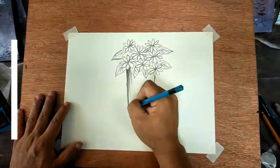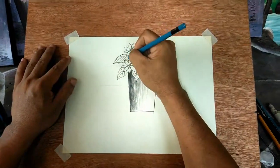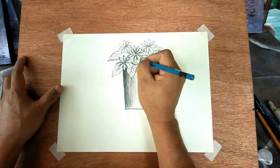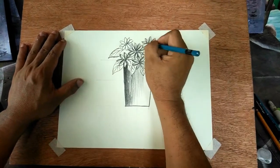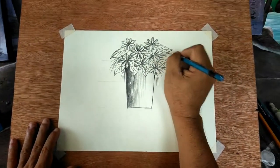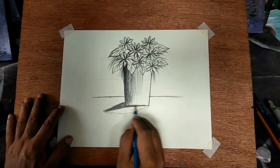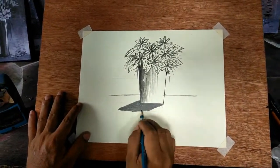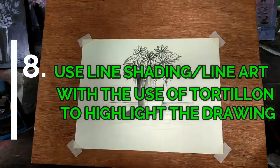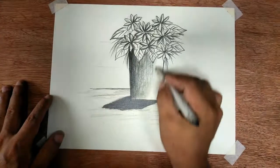Add shadow to make it more realistic. Shadow should be opposite the light source. Use line shading with the use of tortillion to highlight the drawing. Tortillion smoothens the drawing and gives a shaded effect.